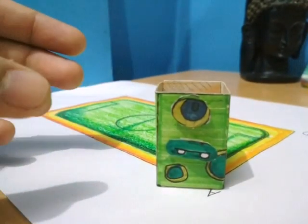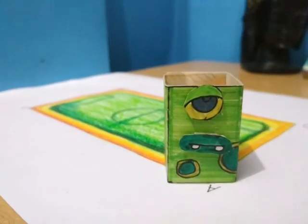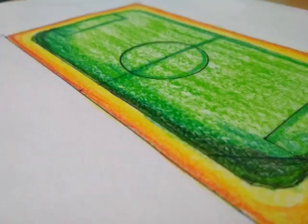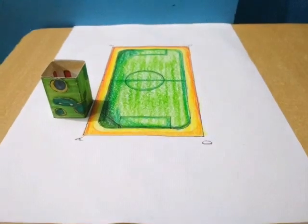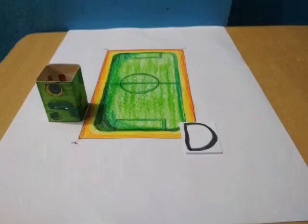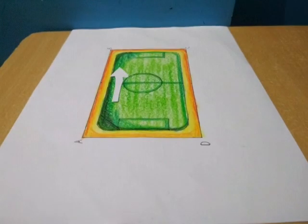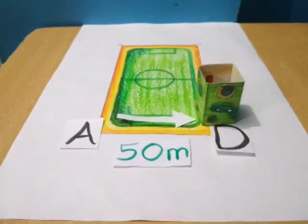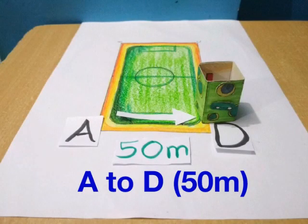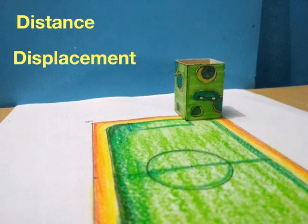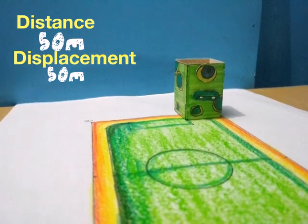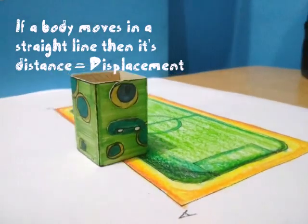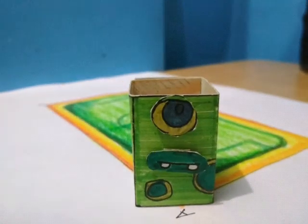This is Mr. Green. Like Krami, Mr. Green also has to travel from point A to point D. Mr. Green doesn't want to cover a long distance like Krami did, so he directly went from A to D which is 50m. Mr. Green's distance and displacement both are 50m. If a body moves in a straight line, then the distance and displacement both are equal.